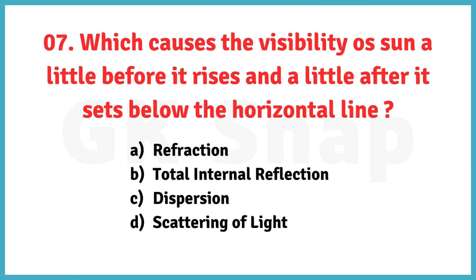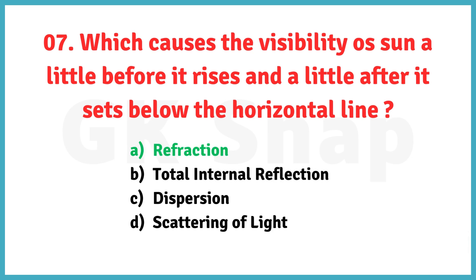Which causes the visibility of the sun a little before it rises, and a little after it sets, below the horizontal line? Correct answer is option A. Refraction.